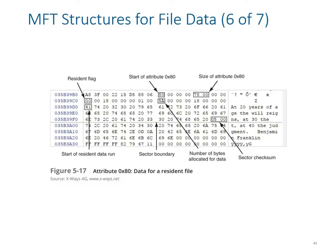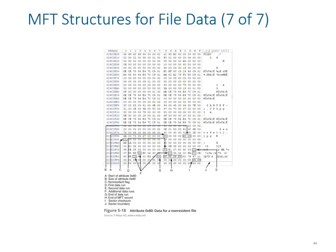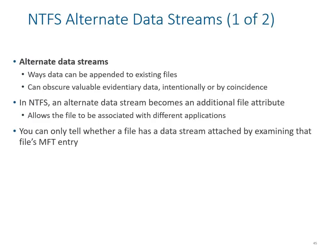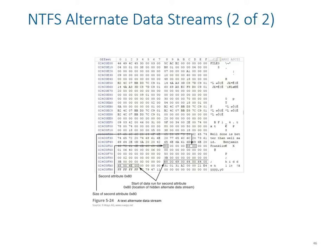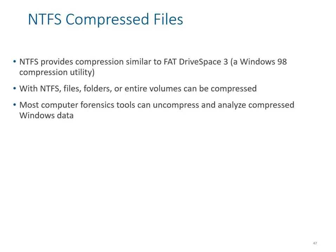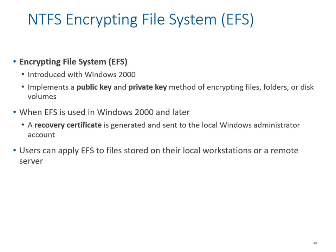NTFS alternate data streams are a way data can be appended to existing files. NTFS compressed files provide compression to data, similar to DriveSpace 3 and the Windows 98 compression utility. Most computer forensics tools can uncompress and analyze compressed data files very effectively.